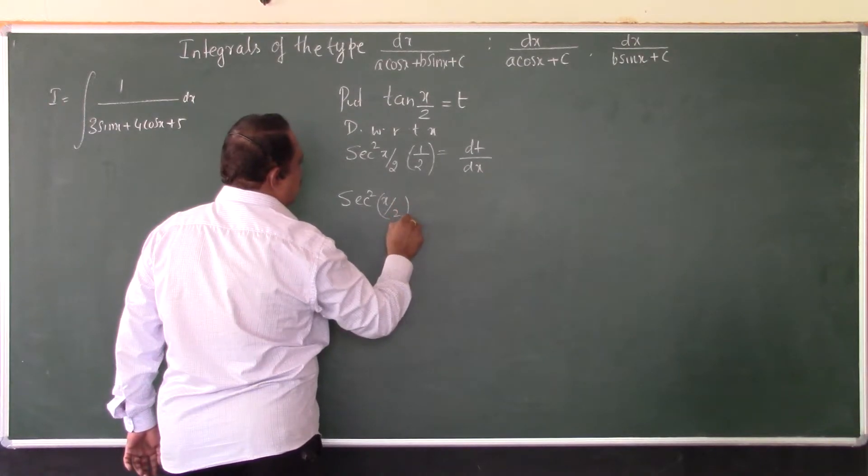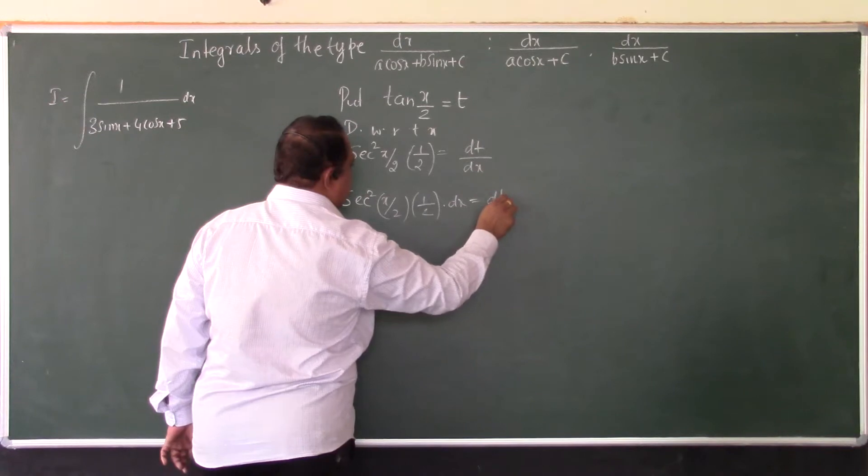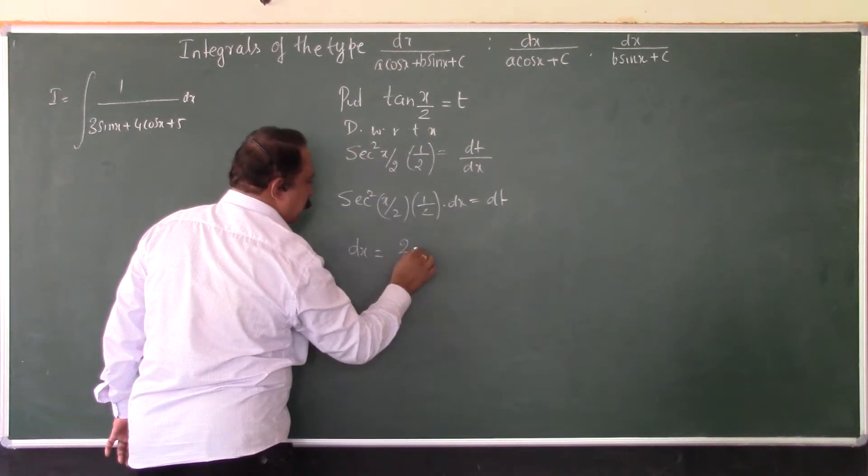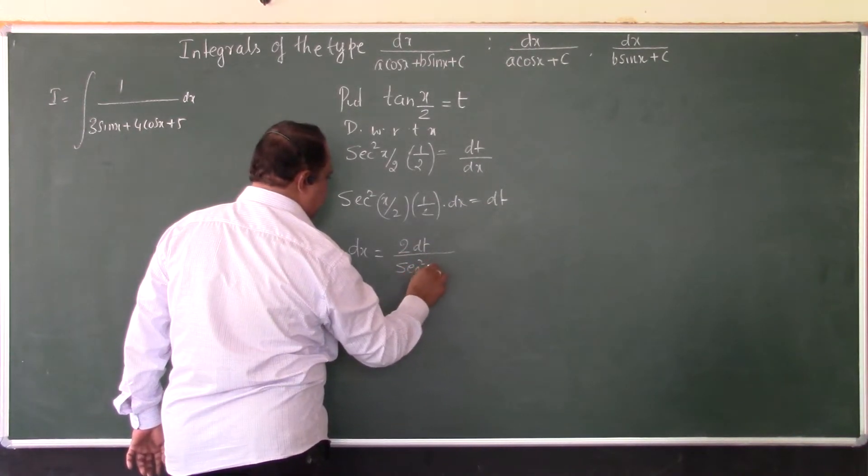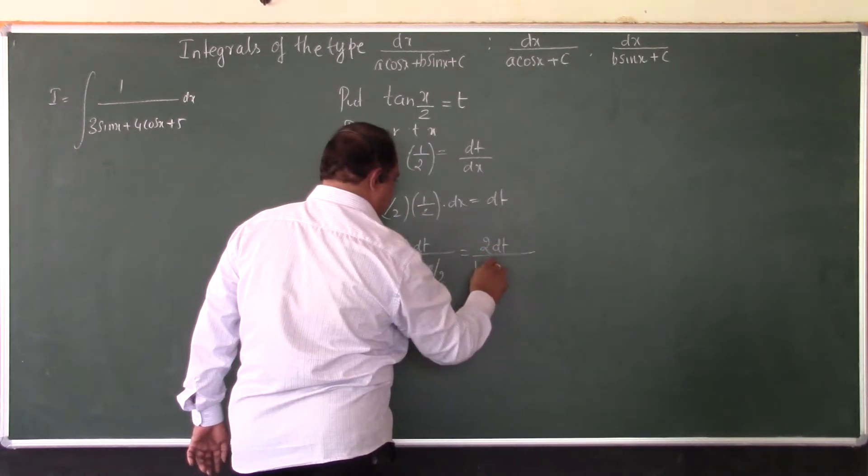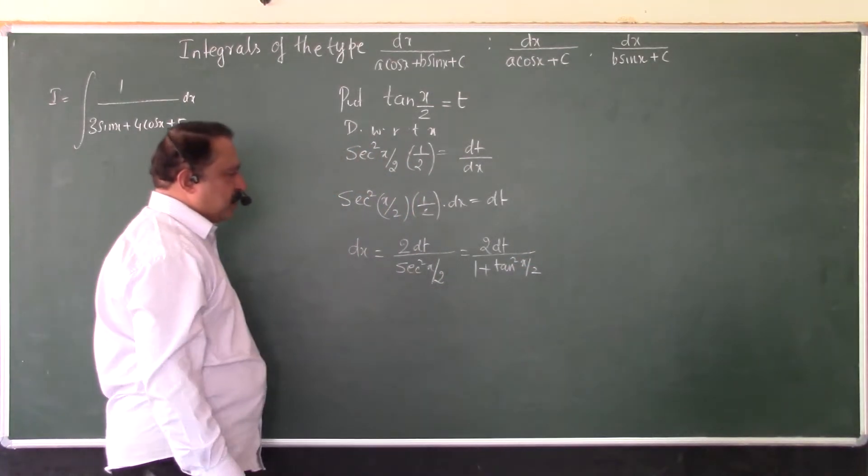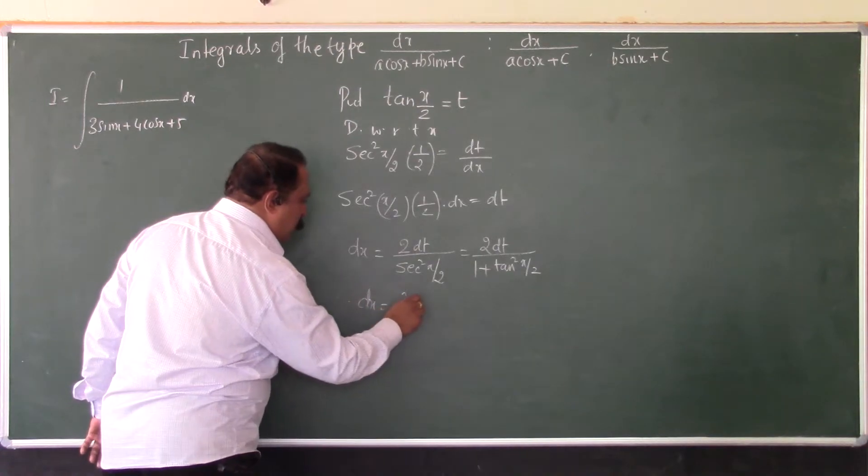Now take the value of dx. dx is 2dt divided by sec²(x/2), or it is 2dt/(1 + tan²(x/2)). Because you know sec²x is 1 + tan²x, therefore dx becomes 2dt/(1 + t²) because we have put tan(x/2) equals t.